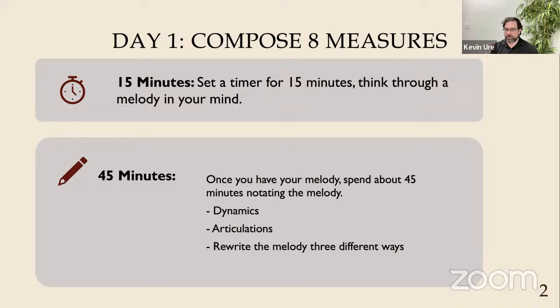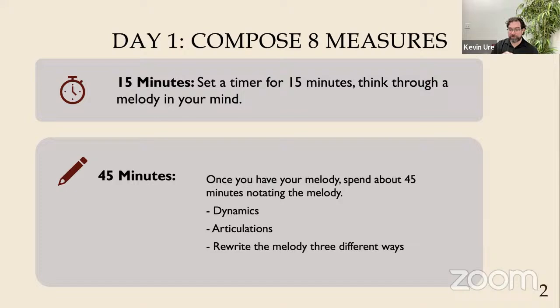Once you feel like you have a really effective melody, if you have time and think it's completely done, rewrite the melody three different ways — this is an optional step, but I think it's pretty effective. You take that melody and try to rewrite it while keeping the essence. If it's a somber melody, it should stay somber; if it has particular motivic ideas, maybe you keep those or modify them a little bit. You want to rewrite the melody three different ways so that if people heard all three versions, they would say, 'okay, I recognize how they're similar, I can't quite put my finger on it, but they do seem similar.' So that's day one — you spend an hour and you're done. You put it away.